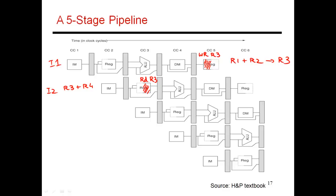So this read of R3 is happening earlier in time than the write into R3 — it's happening in cycle three, whereas the write into R3 is happening in cycle five. So obviously we are reading some old and bogus value of R3 and proceeding, in which case I2 is just producing a wrong result. So this is not going to work. If there is a producer instruction which produces a value into R3, and here is a consumer instruction which reads R3, issuing them back to back through the pipeline just won't work because the consuming instruction proceeds with a wrong result.